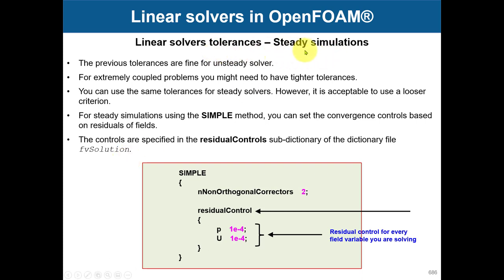For steady simulations: remember that when the initial residuals equal the final residuals, that is an indication of steady behavior. You can add a residualControl tolerance in the simpleFoam or steady solver settings. When your initial residuals reach that value, the solver will automatically stop and tell you that you've reached a converged solution. That doesn't happen very often, but it's a way to implement residual control with steady solvers.